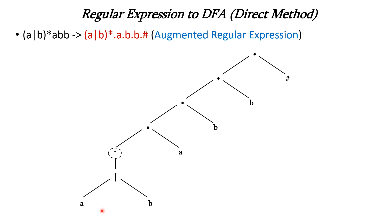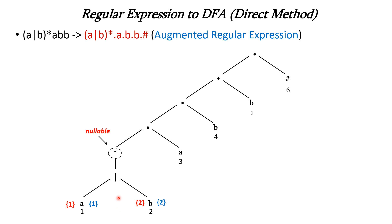Now we number the leaf nodes starting from 1 to 6. Node A is numbered 1, B is 2, A is 3, B is 4, B is 5, and hash is 6. Nullable is always true for the closure operator. The first position and last position for each leaf node equals its node number. So firstpos and lastpos of node 1 is {1}, node 2 is {2}, node 3 is {3}, node 4 is {4}, node 5 is {5}, and node 6 is {6}.